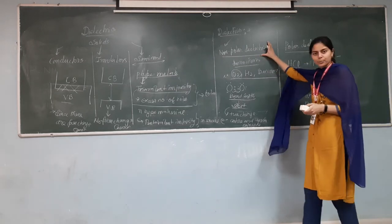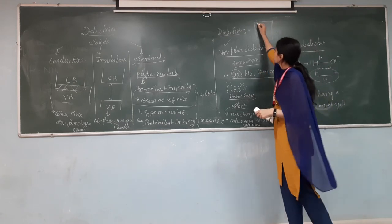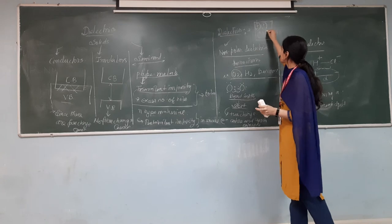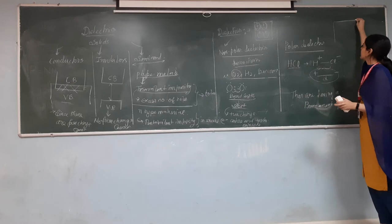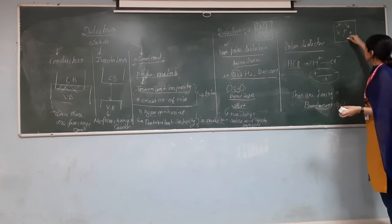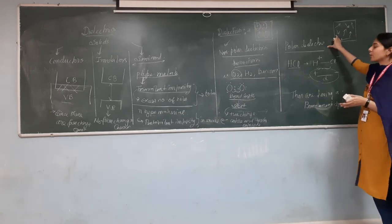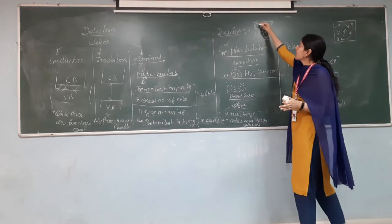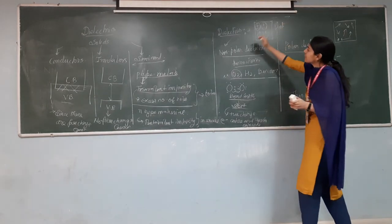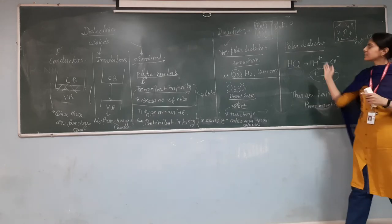In non-polar dielectrics, the positive and negative charges coincide. In polar dielectrics, permanent dipoles already exist but are randomly arranged since no electric field has been applied. In both cases without an electric field, the net dipole moment is zero — until we apply an electric field, which causes positive and negative charges to displace slightly and align in the direction of the field.